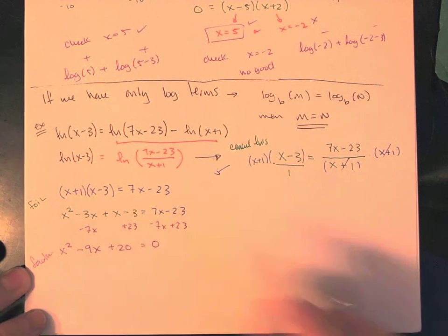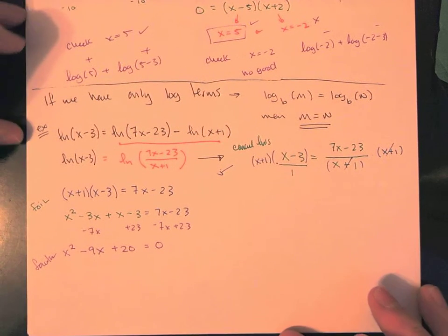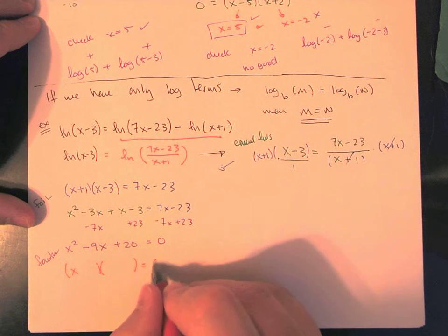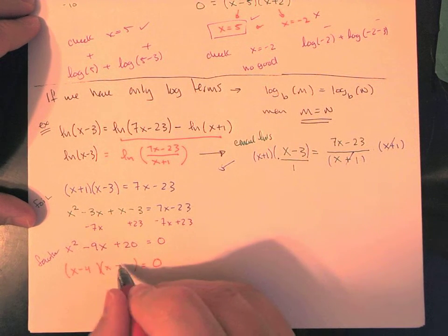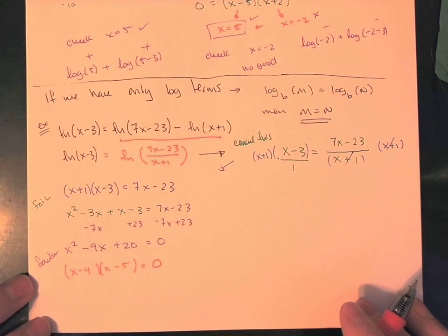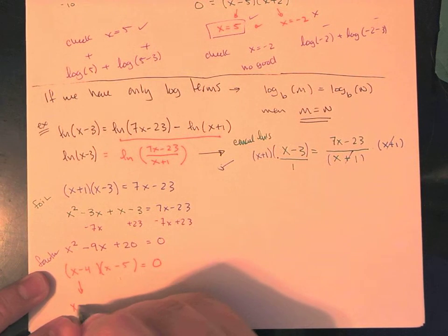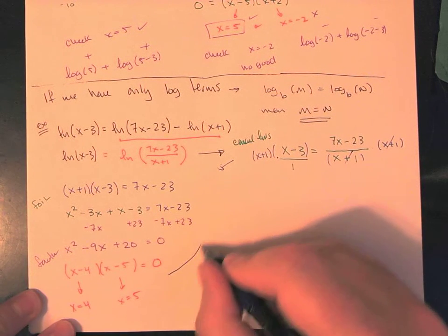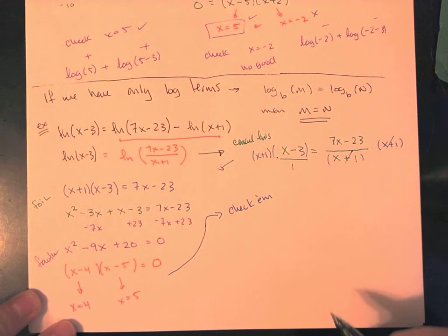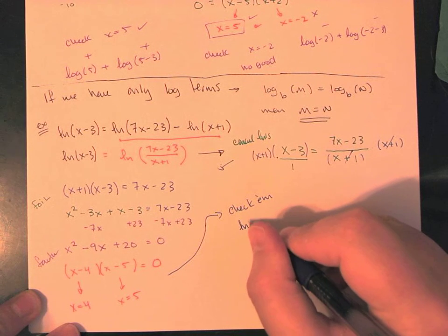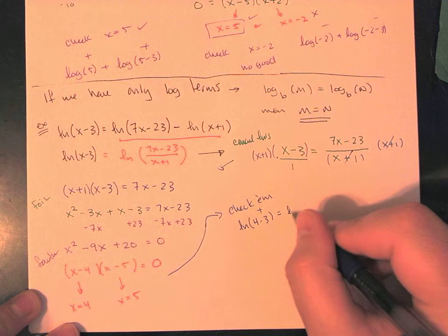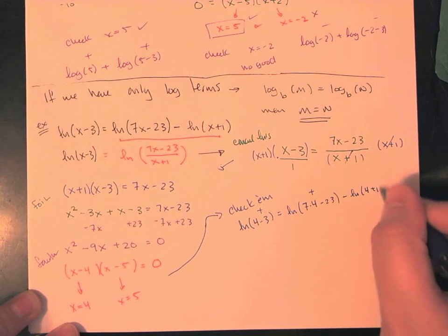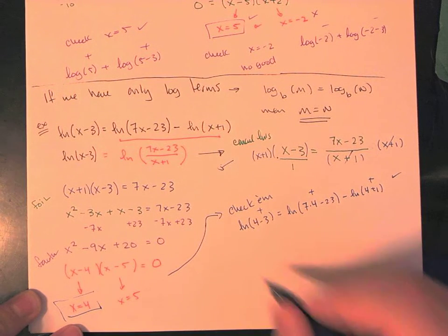Everything is on one side, so now we factor. We need something that multiplies to positive 20 and adds to negative 9 — that's negative 4 and negative 5. So we get x minus 4 times x minus 5 equals 0, giving two positive values: x equals 4 and x equals 5. But we need to check them. Back in the original: natural log of 4 minus 3 is positive; natural log of 28 minus 23 is positive; natural log of 4 plus 1 is positive — so x equals 4 works.